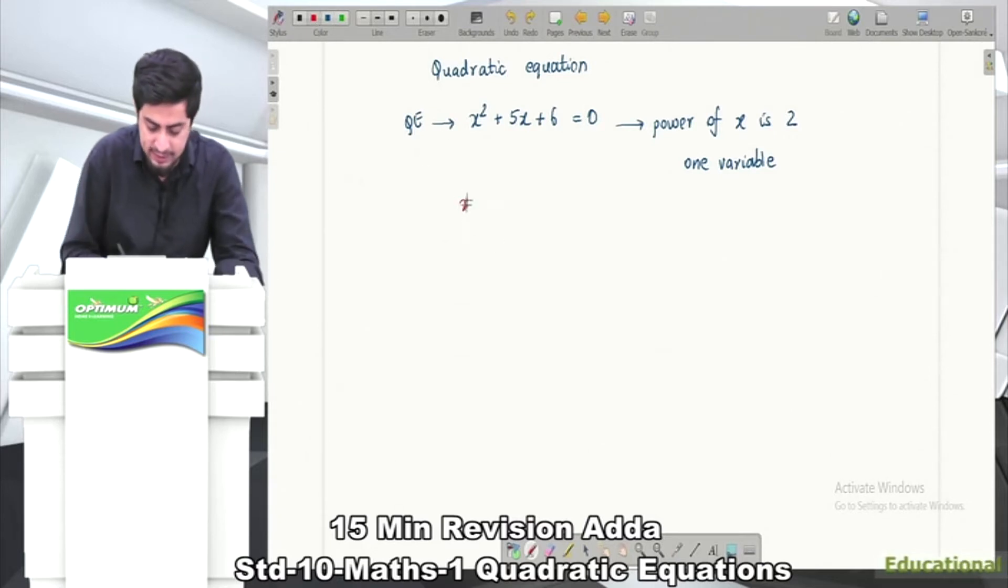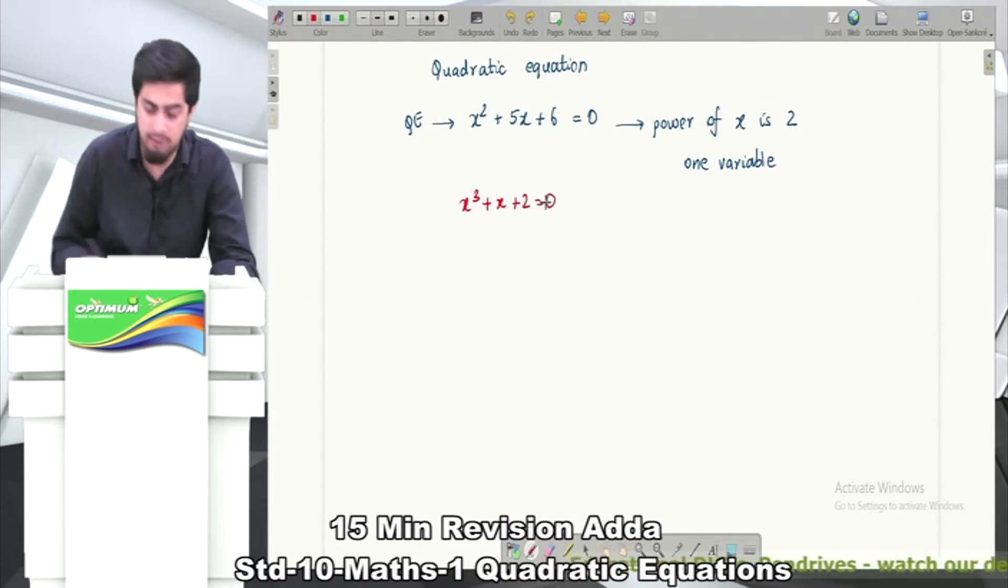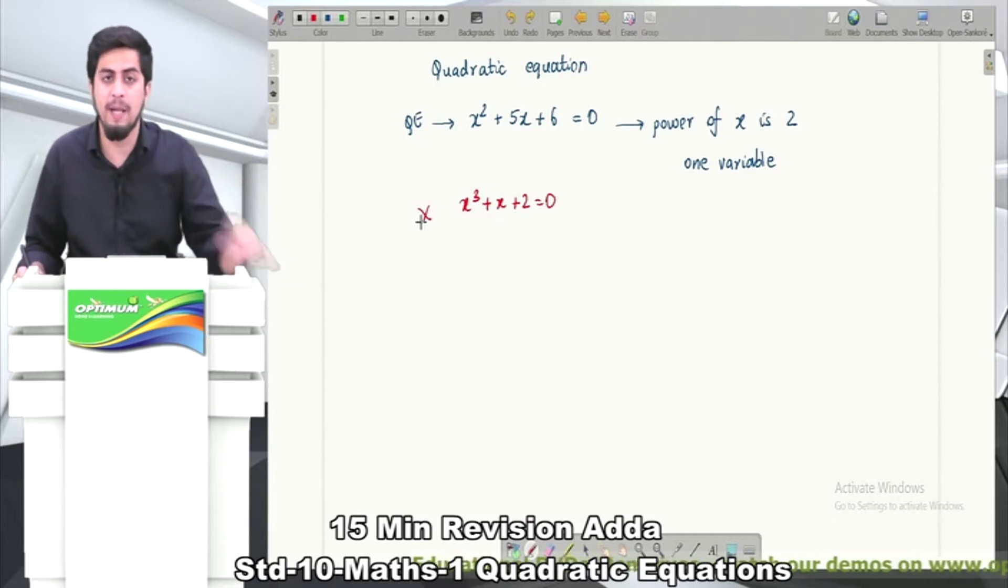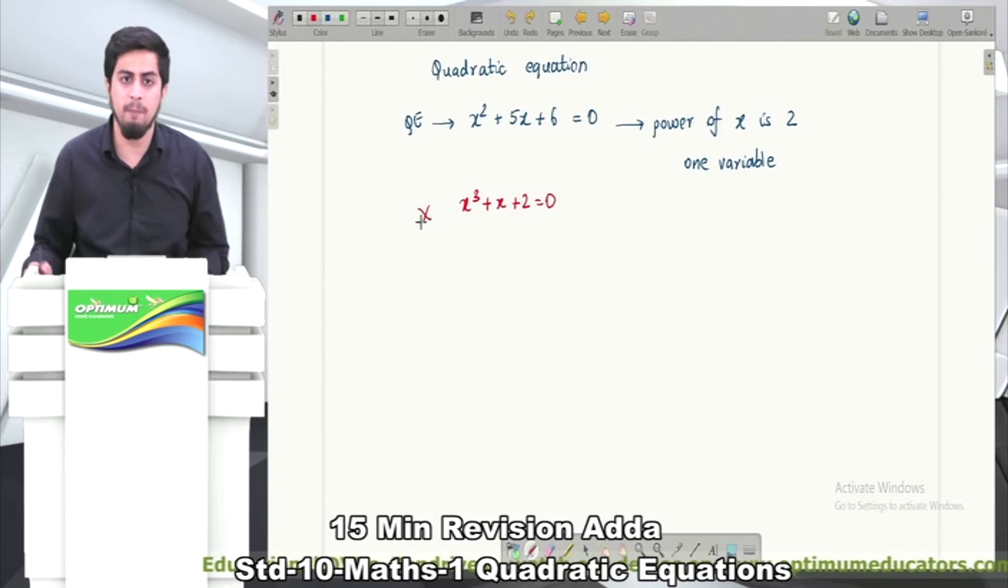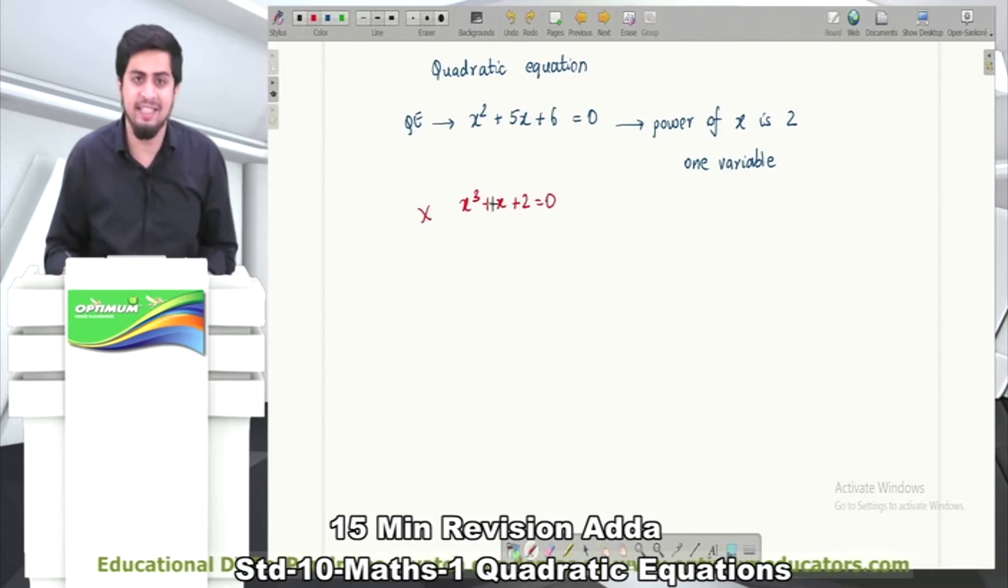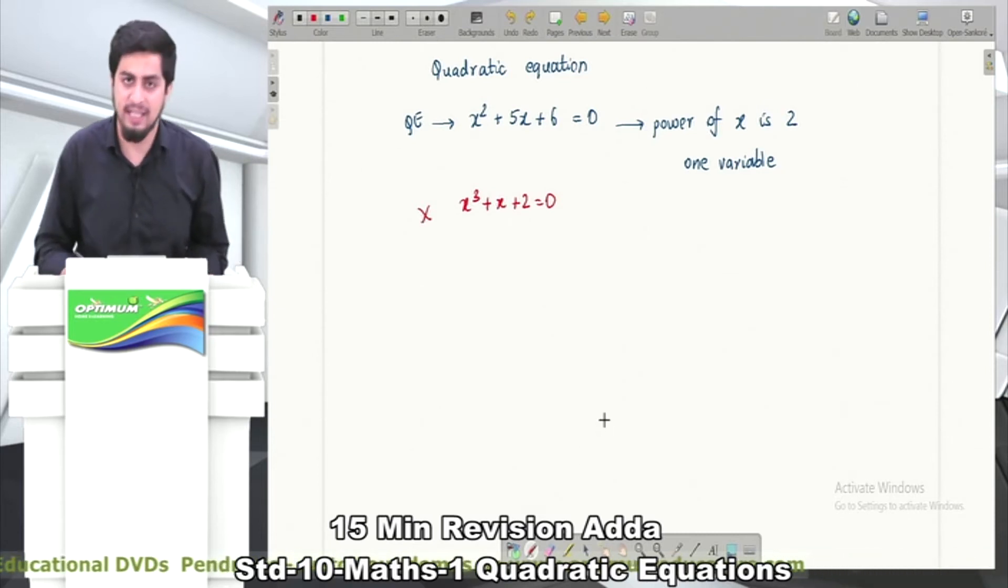Let's take another example: x³ + x + 2 = 0. Is this a quadratic equation? The answer will be no, this is not a quadratic equation. Why? Because the power is 3. In a quadratic equation, the maximum power should be 2, not 3.